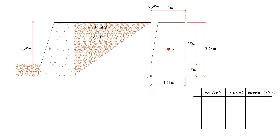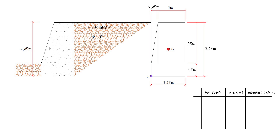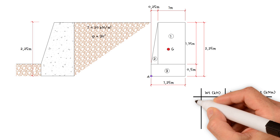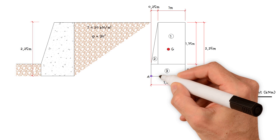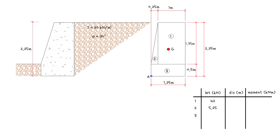Let's divide the cross section of the wall up into 3 simple shapes numbered 1 to 3. The weight of section 1 equals 1 times 1.75 meters times 24 kilonewtons per cubic meter, which equals 42 kilonewtons. The weight of section 2 equals 0.5 times 0.25 meters times 1.75 meters times 24 kilonewtons per cubic meter, which equals 5.25 kilonewtons. The weight of section 3 equals 0.5 meters times 1.25 meters times 24 kilonewtons per cubic meter, which equals 15 kilonewtons.